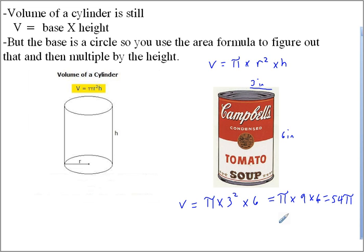And when we do that, 54 times pi, it's just going to be equal to, if we use 3.14 for pi, it's going to be equal to 169.56.